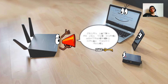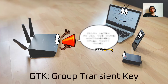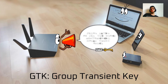The second important key is the so-called group transient key. As its name suggests, it is used for group messaging and hence it is the same for each client that is currently connected to the access point. Over the course of the WPA2 execution between the client and the access point, it is only shared from the access point towards the client.